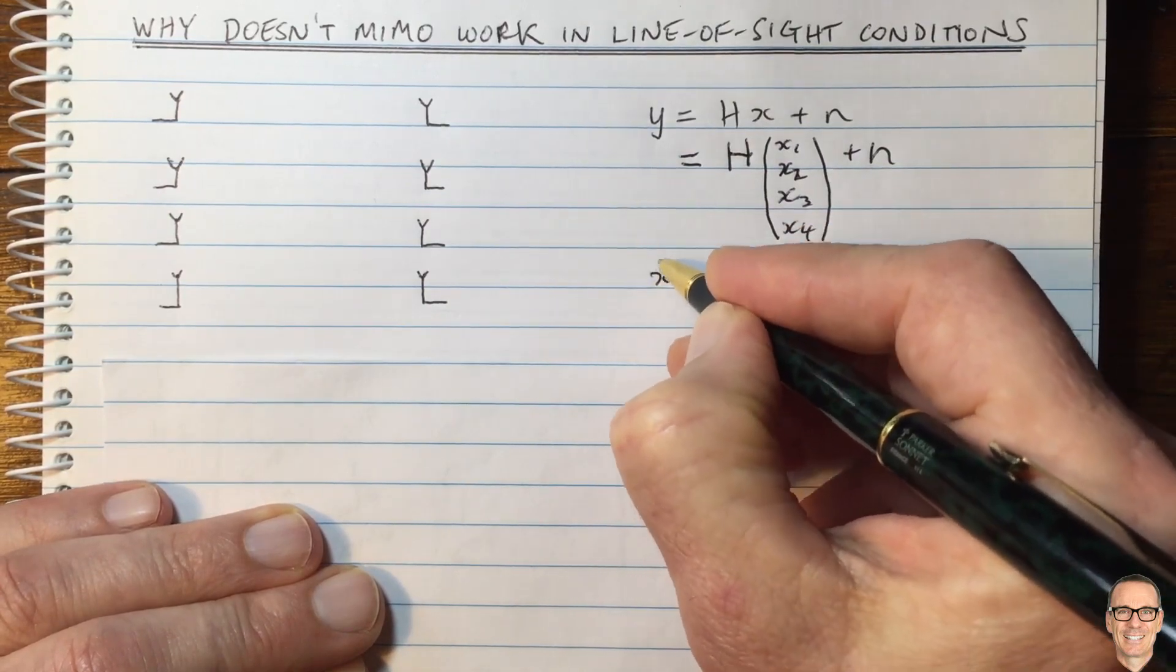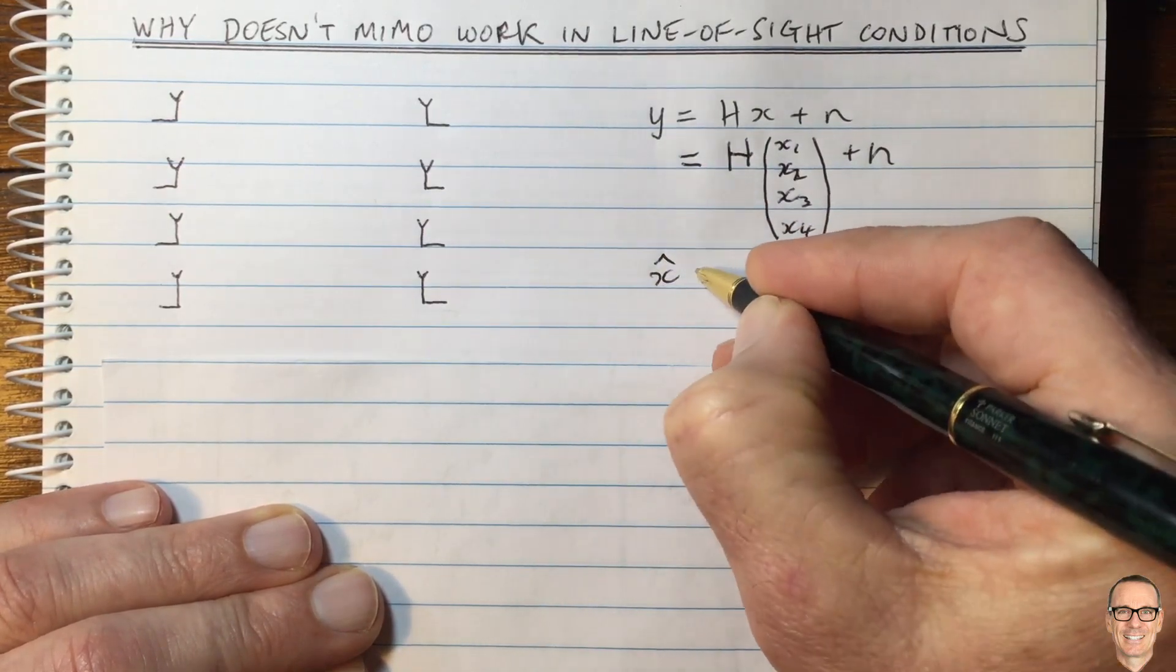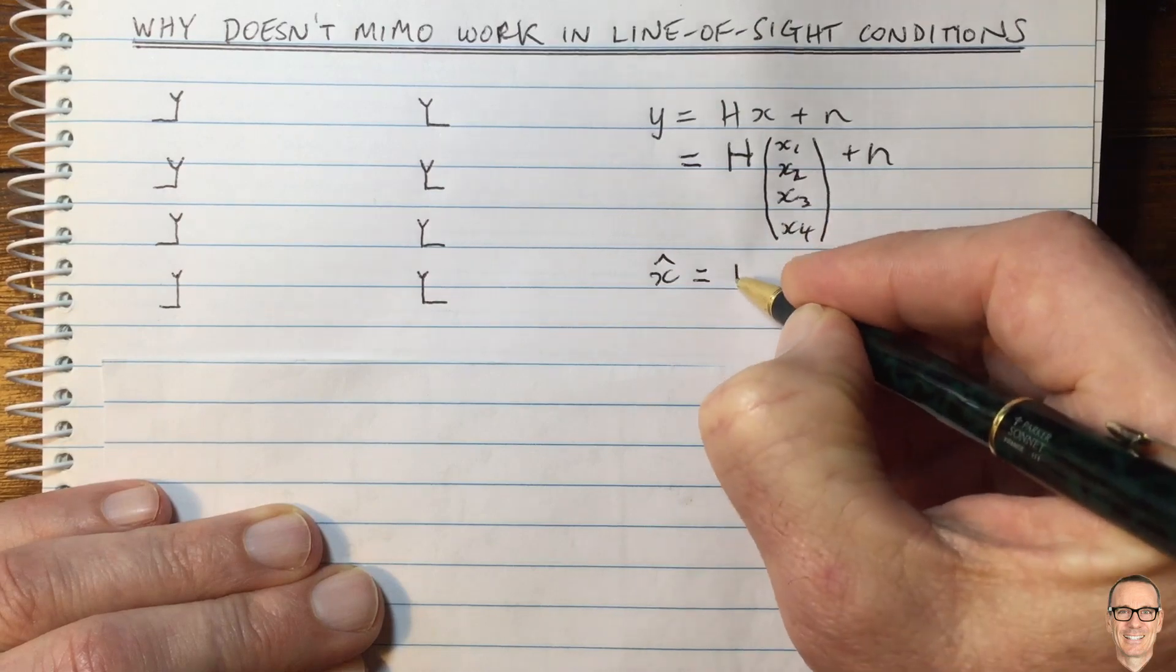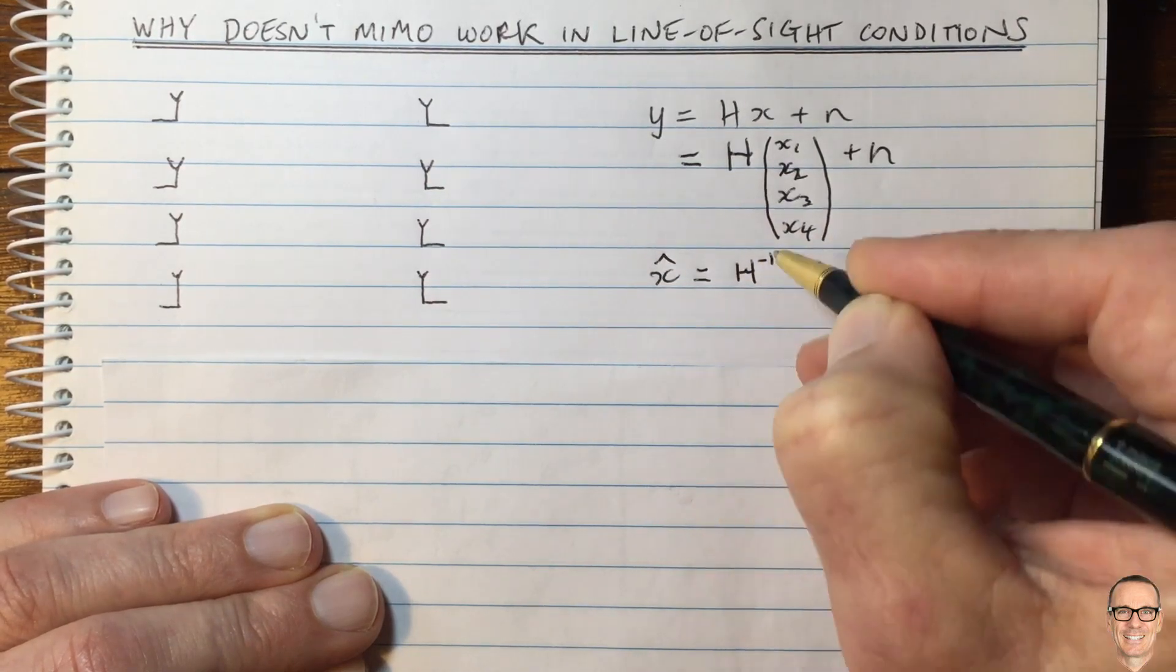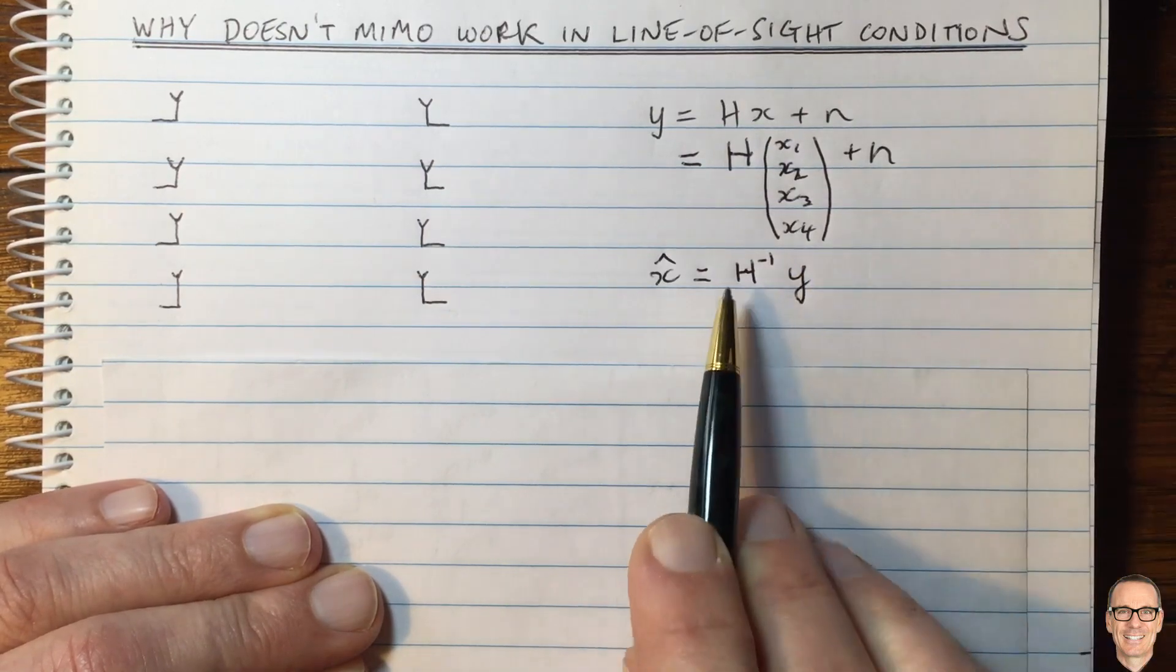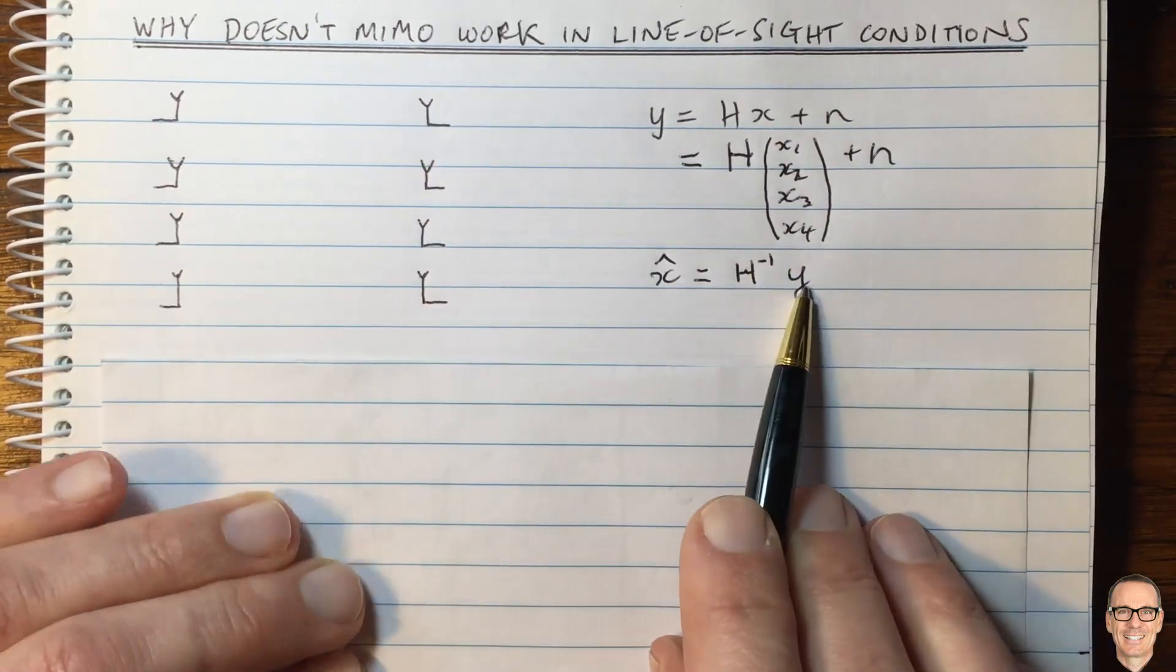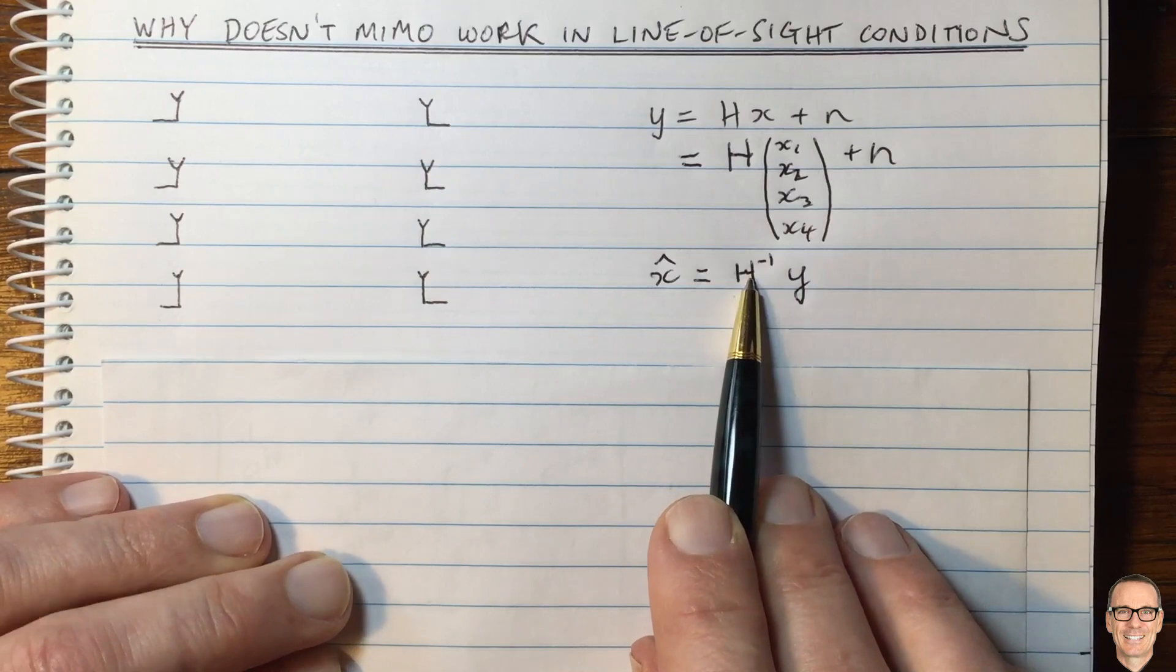something you could do is multiply Y by the inverse of the channel. If you have that channel matrix, then you can take your received measurements, which are the vector Y, and multiply by the inverse of the channel,